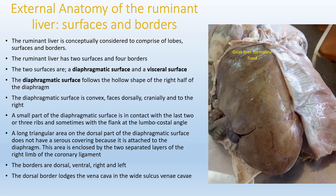On this diagram of a goat liver fixed in formalin, we can see the diaphragmatic surface. Normally this diaphragmatic surface is covered by the diaphragm, and in this picture the diaphragm has been reflected from the liver, showing where the liver follows the dome shape of the diaphragm. Another feature visible here is the notch for the round ligament, which is one of the liver ligaments that helps attach the liver to the diaphragm. In old adult ruminants, the round ligament would have disappeared and is no longer visible.